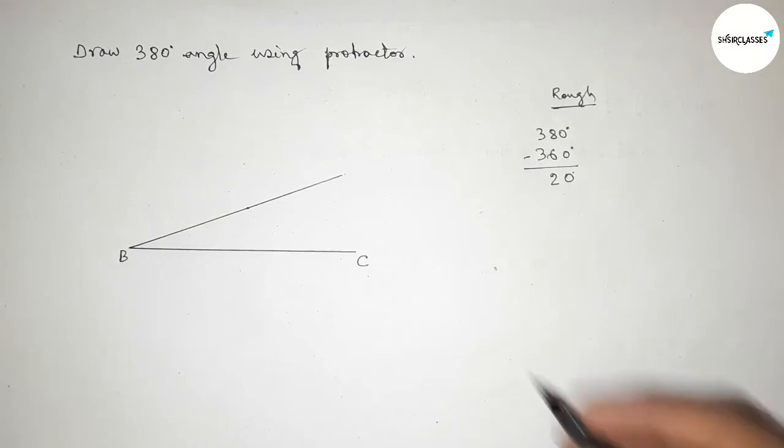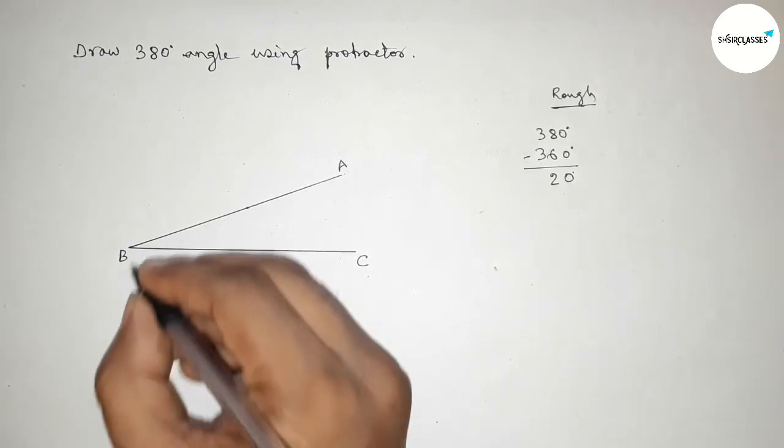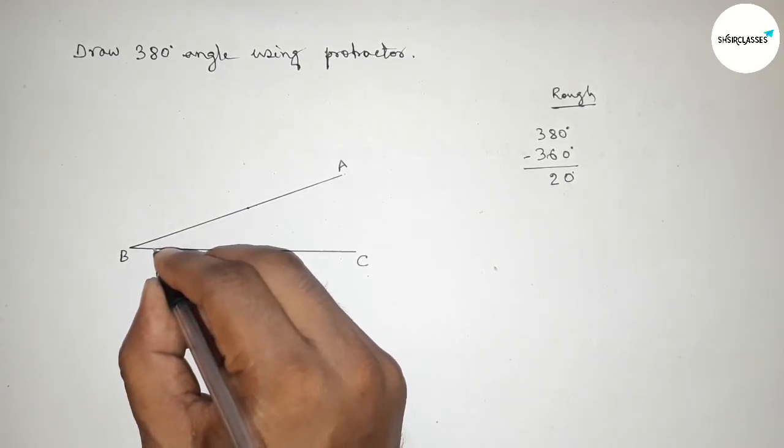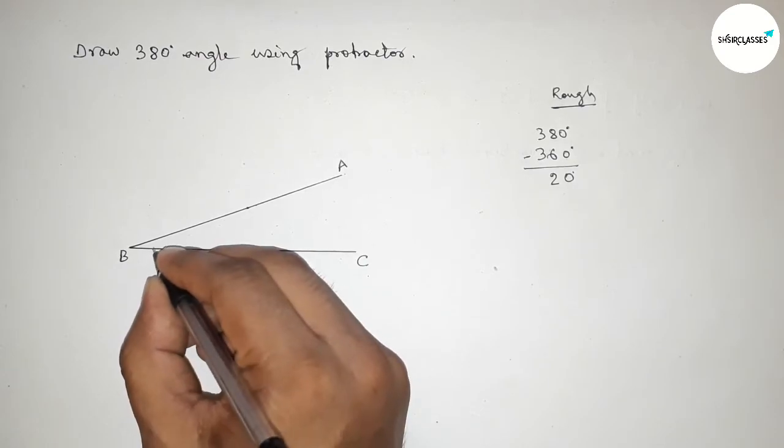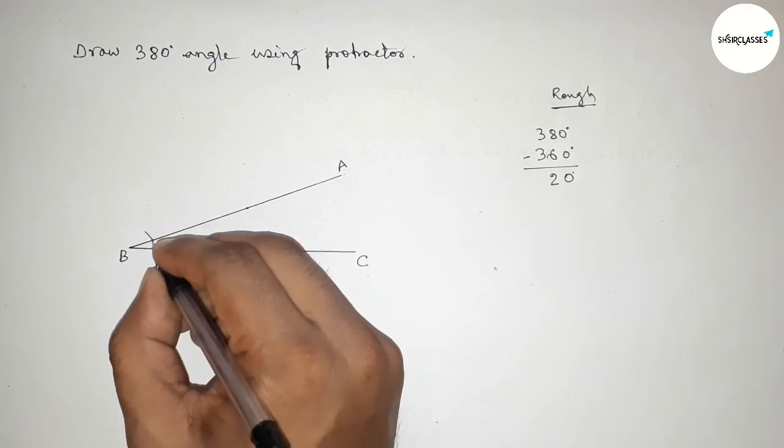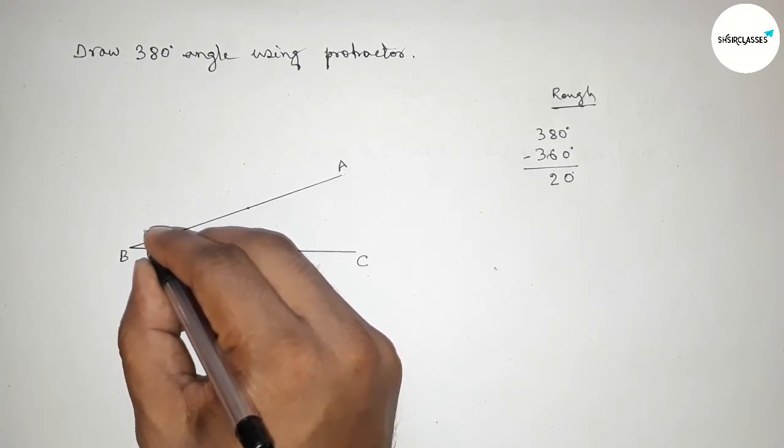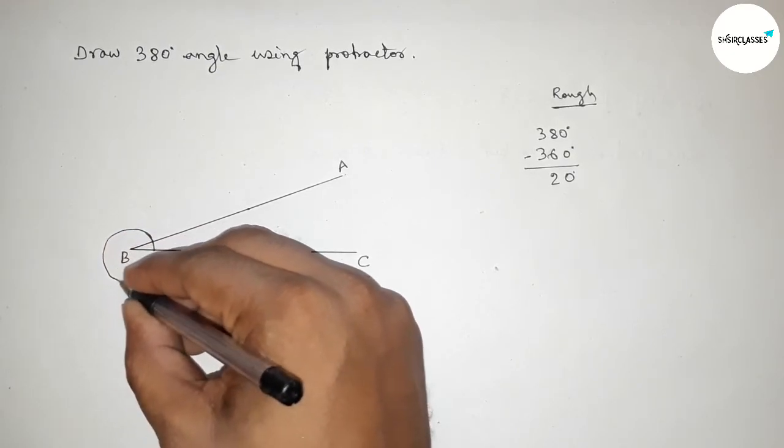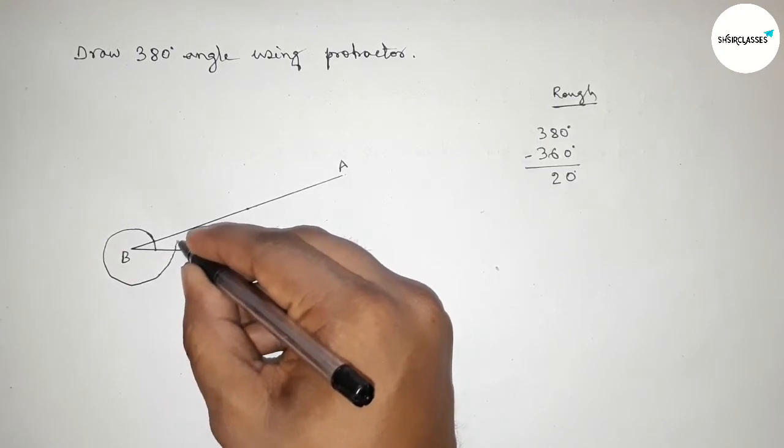Now we have to draw an arc from the line BC. So drawing here an arc from the line BC to the line AB by this way. Here drawing an arc by this way.